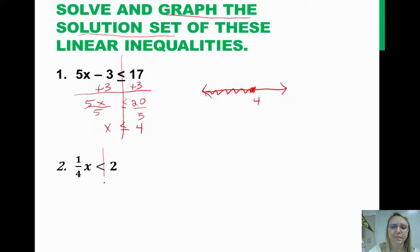On this one, we have 1/4 x is less than 2. So I'm going to multiply both sides by 4. So this will be x is less than 8. Graphing that one, we have 8. It's going to be an open circle, and x is going in that direction.